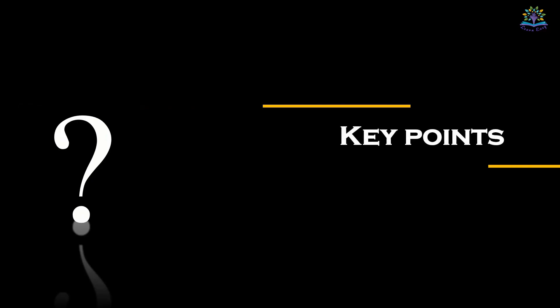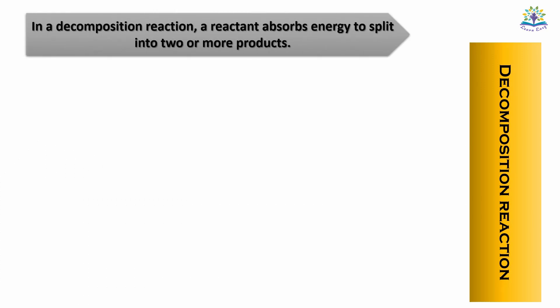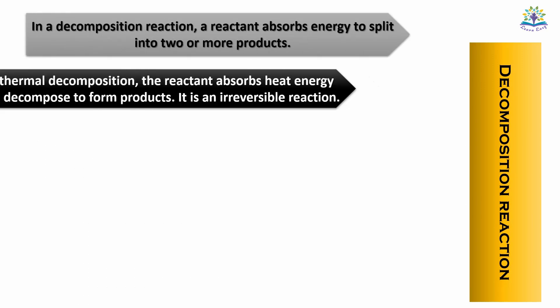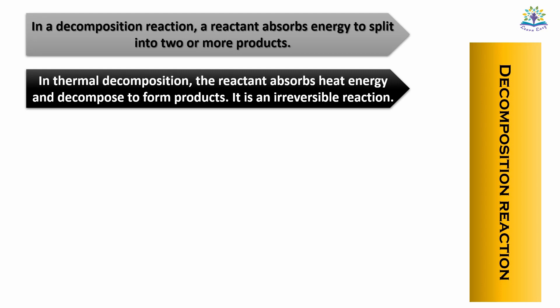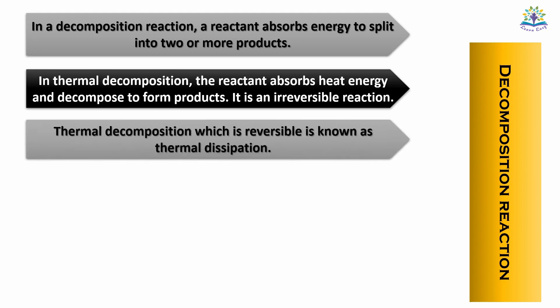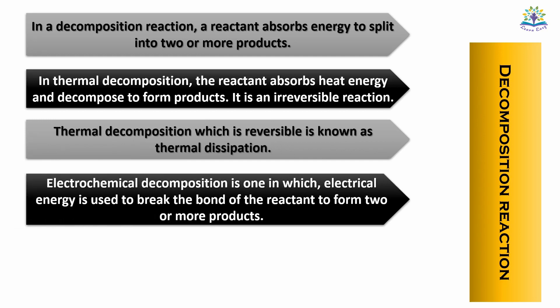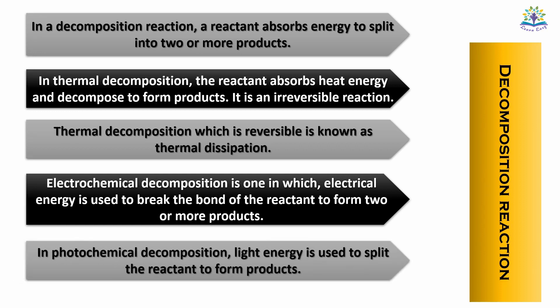In summary, in a decomposition reaction, a reactant absorbs energy to split into two or more products. In thermal decomposition, the reactant absorbs heat energy and decomposes to form products — it is generally an irreversible reaction. Thermal decomposition which is reversible is known as thermal dissociation. In electrochemical decomposition, electrical energy is used to break the bonds of the reactant to form two or more products. In photochemical decomposition, light energy is used to split the reactant to form products.